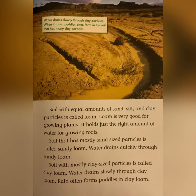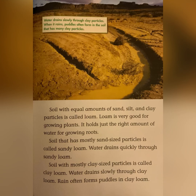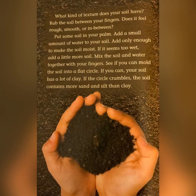Soil with equal amounts of sand, silt, and clay particles is called loam. Loam is very good for growing plants — it holds just the right amount of water for growing roots. Soil that has mostly sand-sized particles is called sandy loam; water drains quickly through sandy loam. Soil with mostly clay-sized particles is called clay loam; water drains slowly through clay loam and rain often forms puddles. What kind of texture does your soil have? Rub the soil between your fingers — does it feel rough, smooth, or in between?